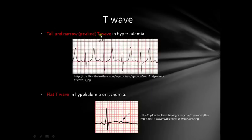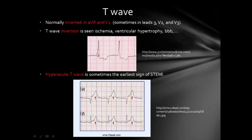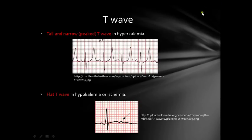A peaked T wave is seen in hyperkalemia — you can see a peaked T wave here. To distinguish it from the hyperacute T wave seen in ST elevation, the hyperacute T waves have a wide base, whereas the peaked T wave in hyperkalemia has a narrow base. The last abnormal T wave is the flat T wave, which is seen mostly in hypokalemia — you can also see a U wave, indicating hypokalemia. So you get a flat T wave and a U wave together.